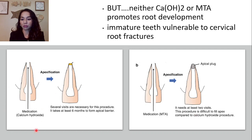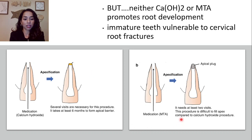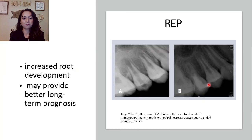Looking at this image, placing calcium hydroxide takes several visits to form that apical seal. With MTA, you need at least two visits and it is more technique-sensitive compared to calcium hydroxide placement. The goal with MTA is to create that apical plug.